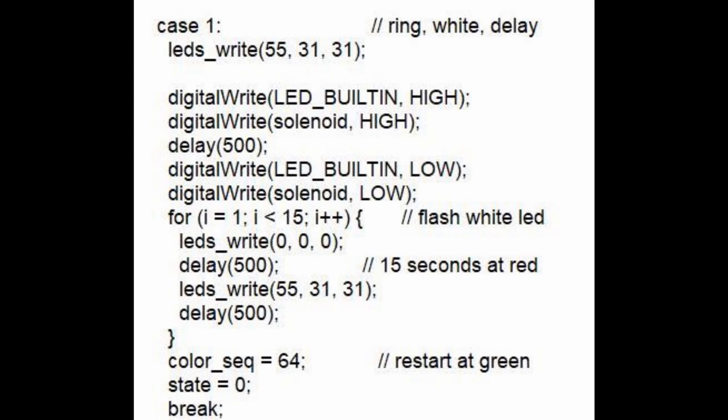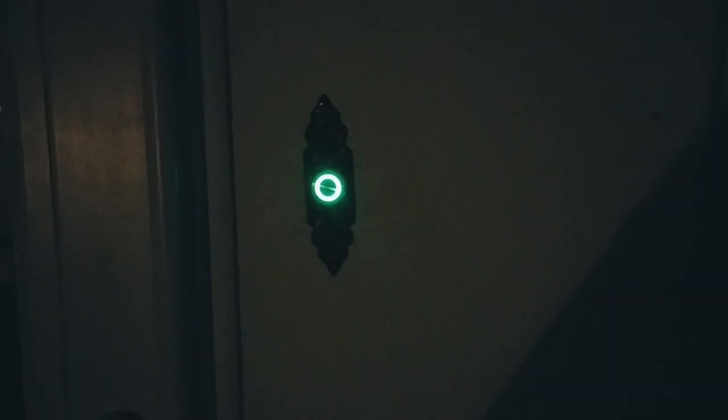State 1 turns the button color to white and then turns on the bell solenoid for half a second. Then the LEDs are flashed white on and off for 15 seconds before returning to state 0. Any button presses are ignored in this state.